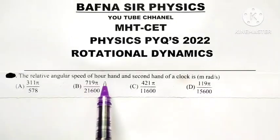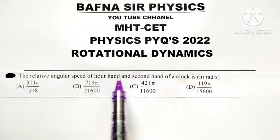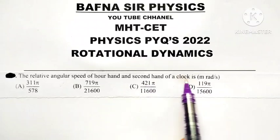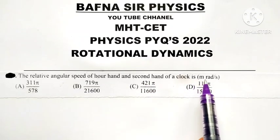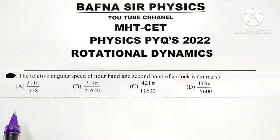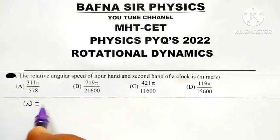The relative angular speed of hour hand and second hand of a clock in radian per second. As far as angular speed is concerned, angular speed omega is always equal to 2π by T.